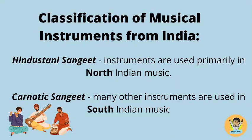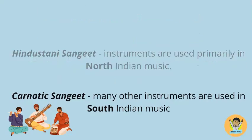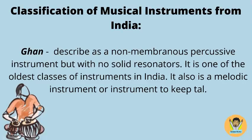Classification of Musical Instruments from India. Hindustani Sangit instruments are used primarily in North Indian music; Carnatic Sangit instruments are used in South Indian music. Ghana is described as a non-membranous percussive instrument with no solid resonators. It is one of the oldest classes of instruments in India and can also be a melodic instrument or an instrument to keep tal.